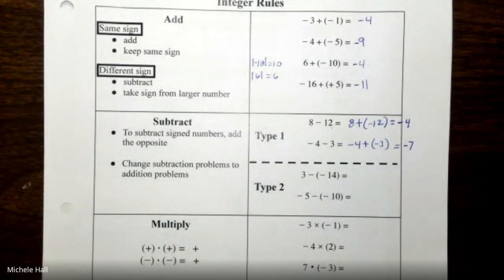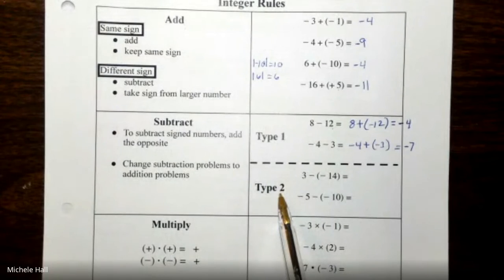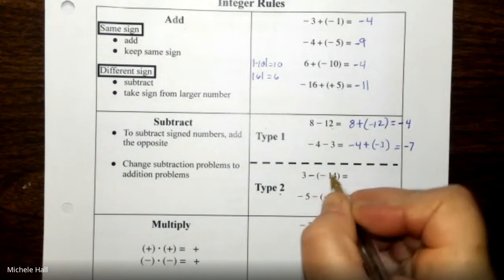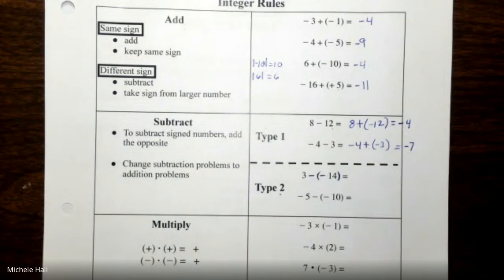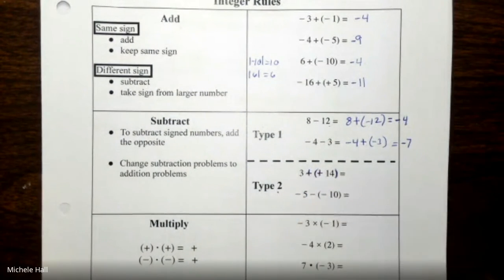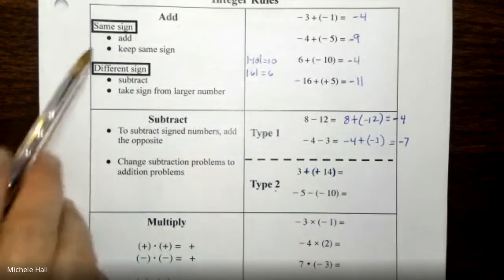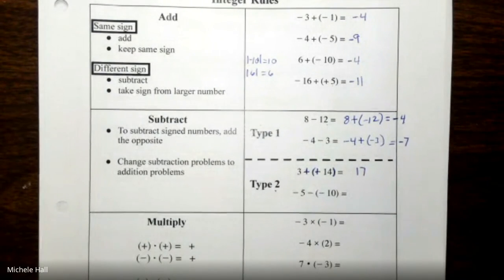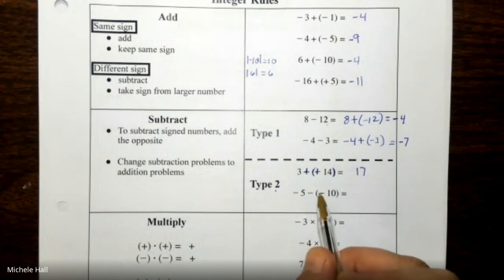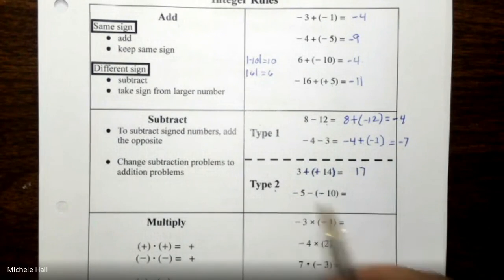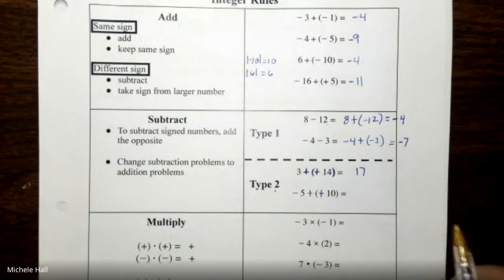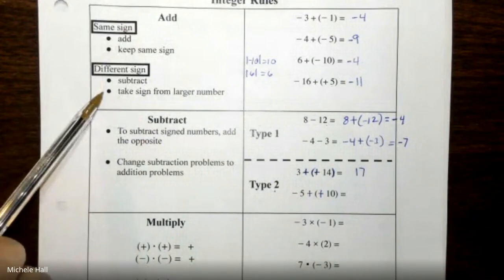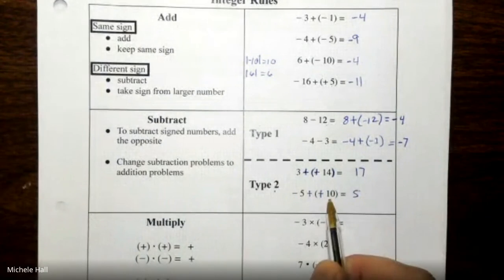Type 2 is when we have double negatives. A negative times a negative equals a positive, so the double negatives become plus, giving 3 plus 14. Adding the same sign: 3 plus 14 is positive 17. One more example with double negatives — the negative out front has nothing to do with those double negatives. The double negatives become plus, and we're adding a negative and a positive — different signs. 10 minus 5 is 5, and we take the sign from 10, giving positive 5.